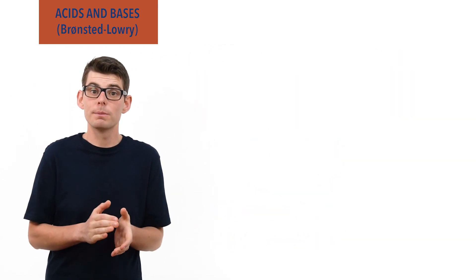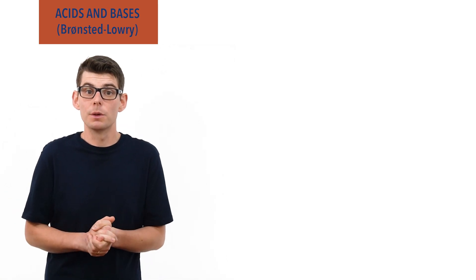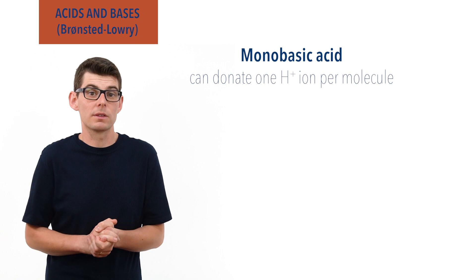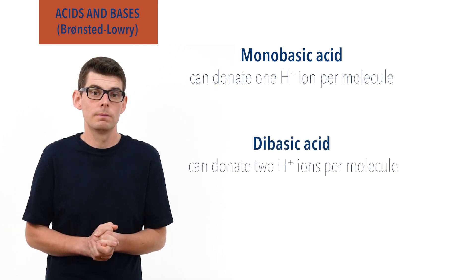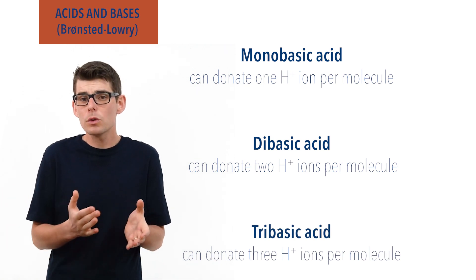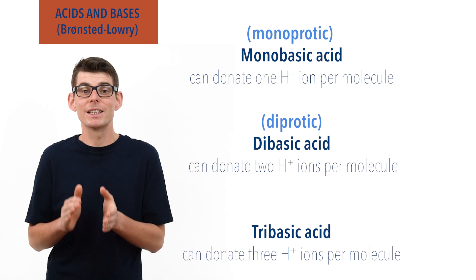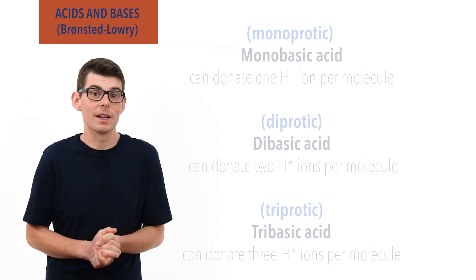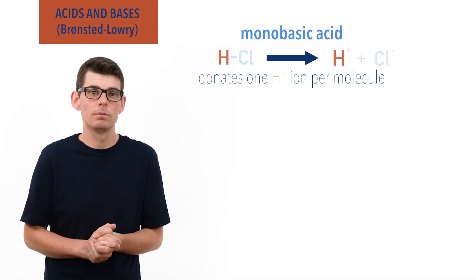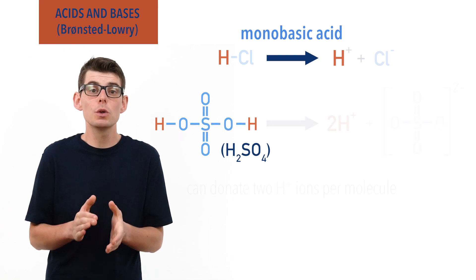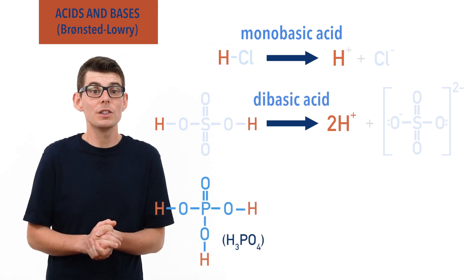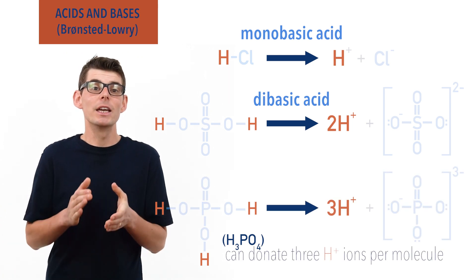For some acids, each molecule can donate more than one H+ ion. Acids that can donate only one H+ ion per acid molecule are called monobasic acids. Acids that can donate two H+ ions per acid molecule are called dibasic acids, and acids that can donate three H+ ions per acid molecule are called tribasic acids. These are also sometimes referred to as monoprotic, diprotic, and triprotic acids. For example, hydrochloric acid, HCl, can donate one H+ ion per molecule, making it a monobasic acid. Sulfuric acid, H2SO4, can donate two H+ ions per molecule, making it a dibasic acid. And phosphoric acid, H3PO4, can donate three H+ ions per molecule, making it a tribasic acid.